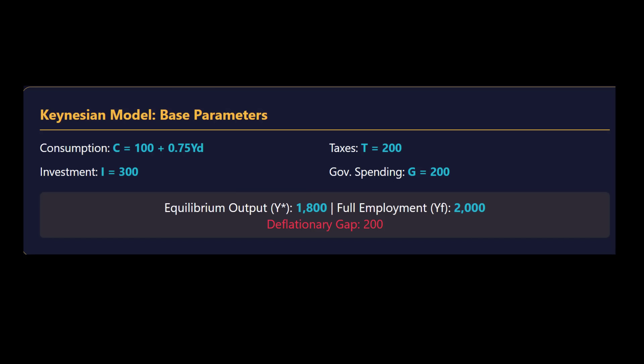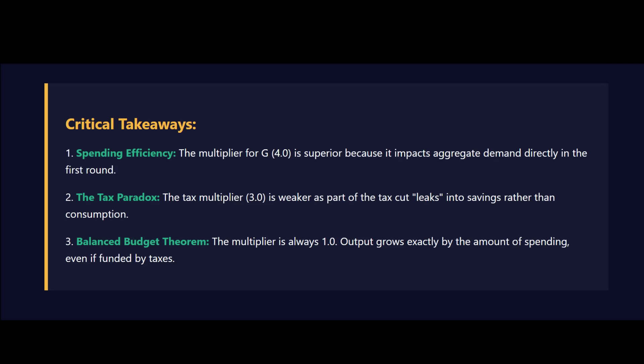Now let's look at Policy C — the tax cut. What happens if the government cuts taxes by 50 instead of spending 50? The efficiency just drops off, because the money goes into consumers' pockets first rather than directly into demand. For this, we need the tax multiplier, and that formula is different: negative MPC divided by 1 minus MPC. With our numbers, that's negative 0.75 divided by 0.25, giving a multiplier of negative three. So a tax cut of negative 50, multiplied by negative three, yields a total boost to the economy of only 150.